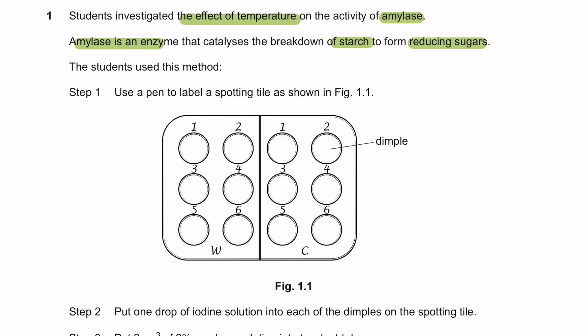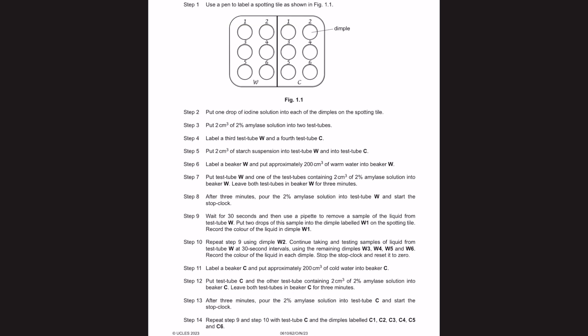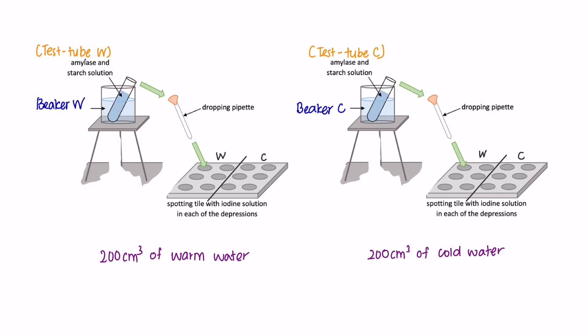The students use this method. I won't be reading all the steps to you, so you can pause this video and read the step-by-step method in performing this experiment. To simplify the experiment for you, basically you have got two test tubes W and test tube C that is mixed with 2% of amylase and starch solution.